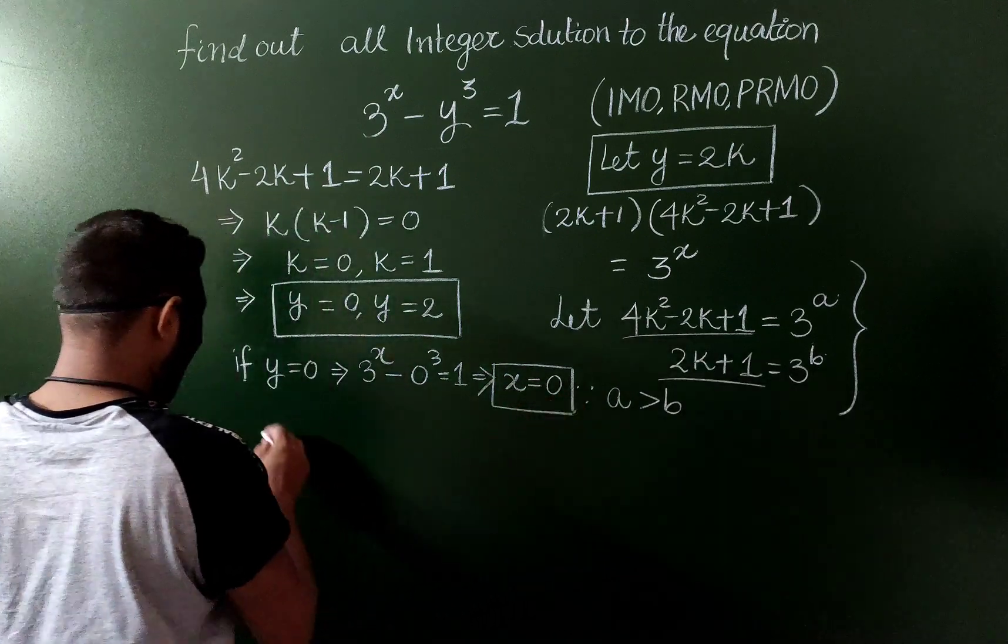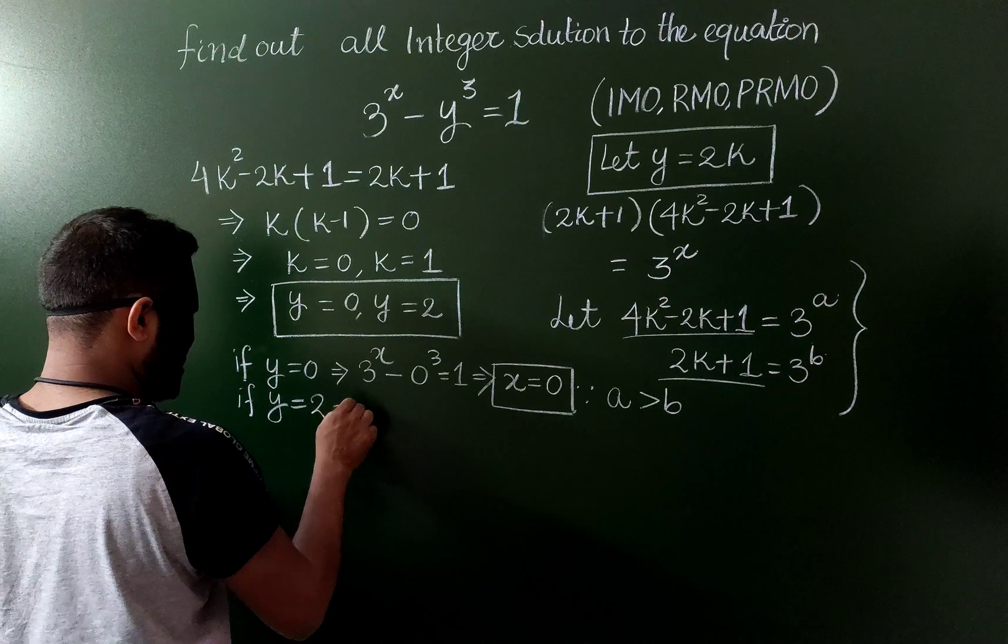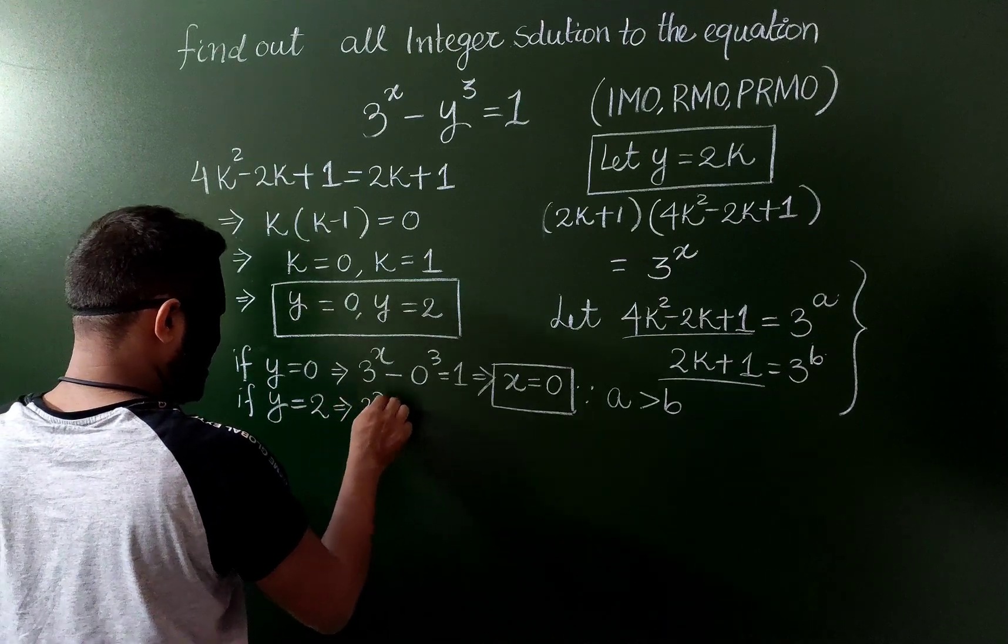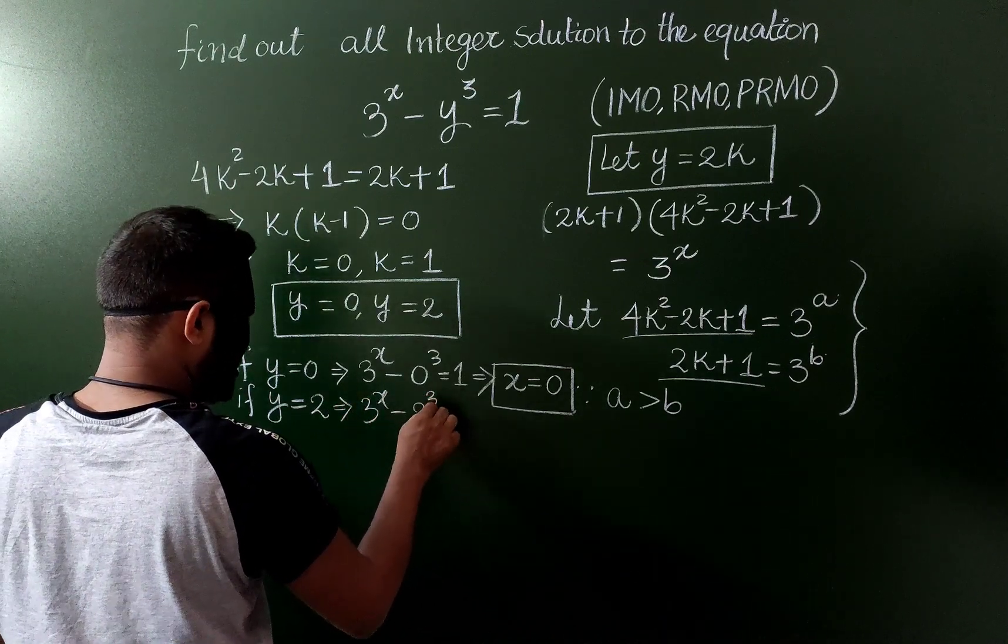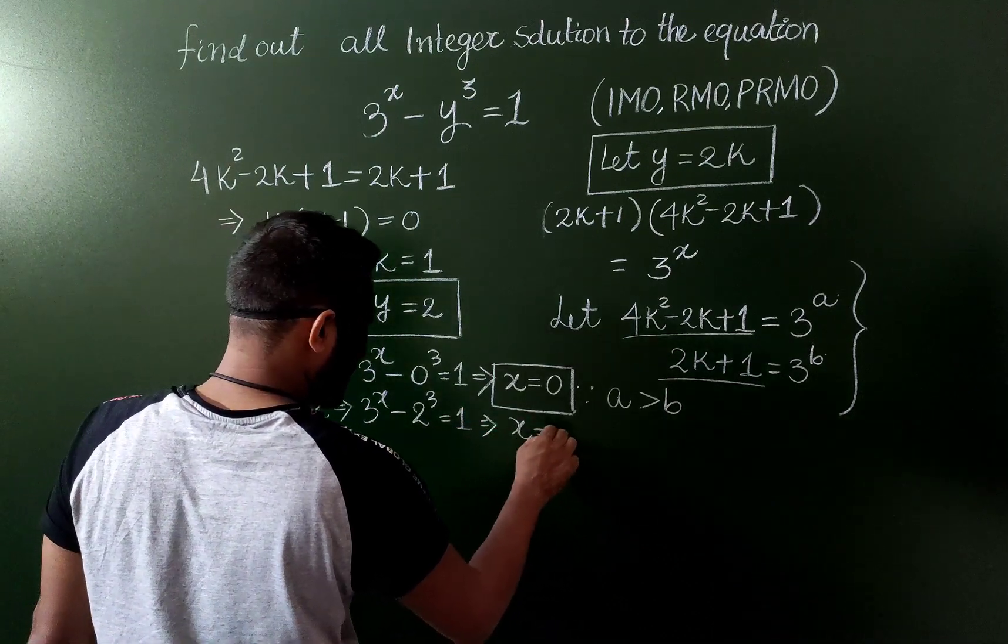And if y is equal to 2, then this is 2 cube, and therefore x is also 2.